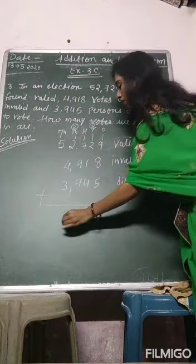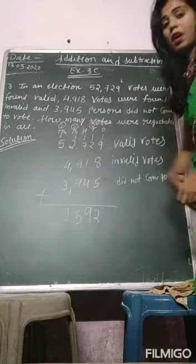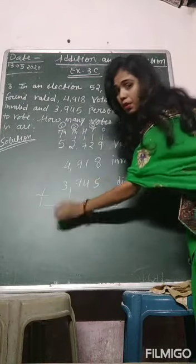11. Carry it forward to 10,000. Now 1 plus 5, it is 6.